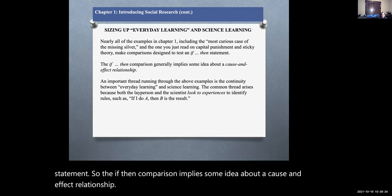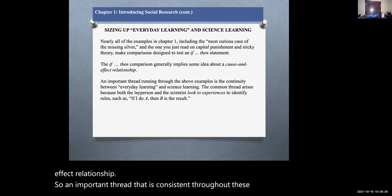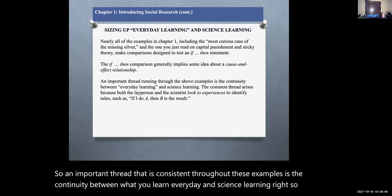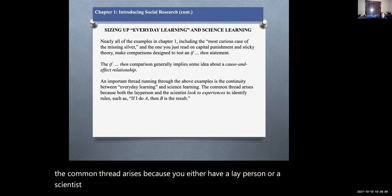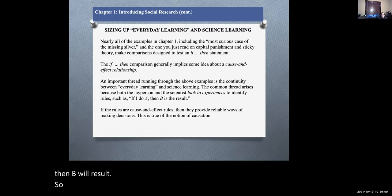An important thread that is consistent throughout these examples is the continuity between what you learn every day and science learning. The common thread arises because either a lay person or a scientist looks to their experiences to identify rules such as if I do A, then B will result. The rules of cause and effect provide reliable ways for us to make decisions. This is the notion of causation.